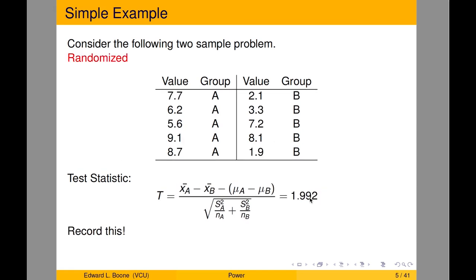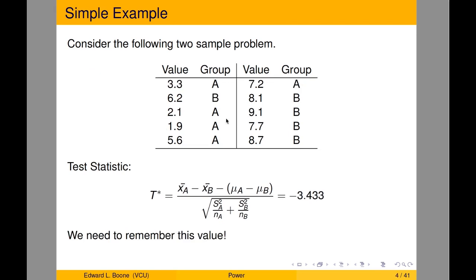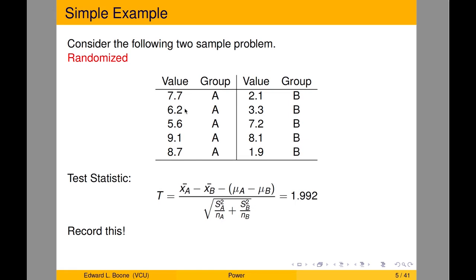Now what we've done is randomized — notice it's marked in red. I have group A and group B, and the numbers differ. For example, 3.3, 2.1, 1.9, and 5.6 were all in group A before, but now 5.6 and 6.2 are in group A, and different values got randomized to group B. We calculate the test statistic and get 1.992, record it, and randomize again.